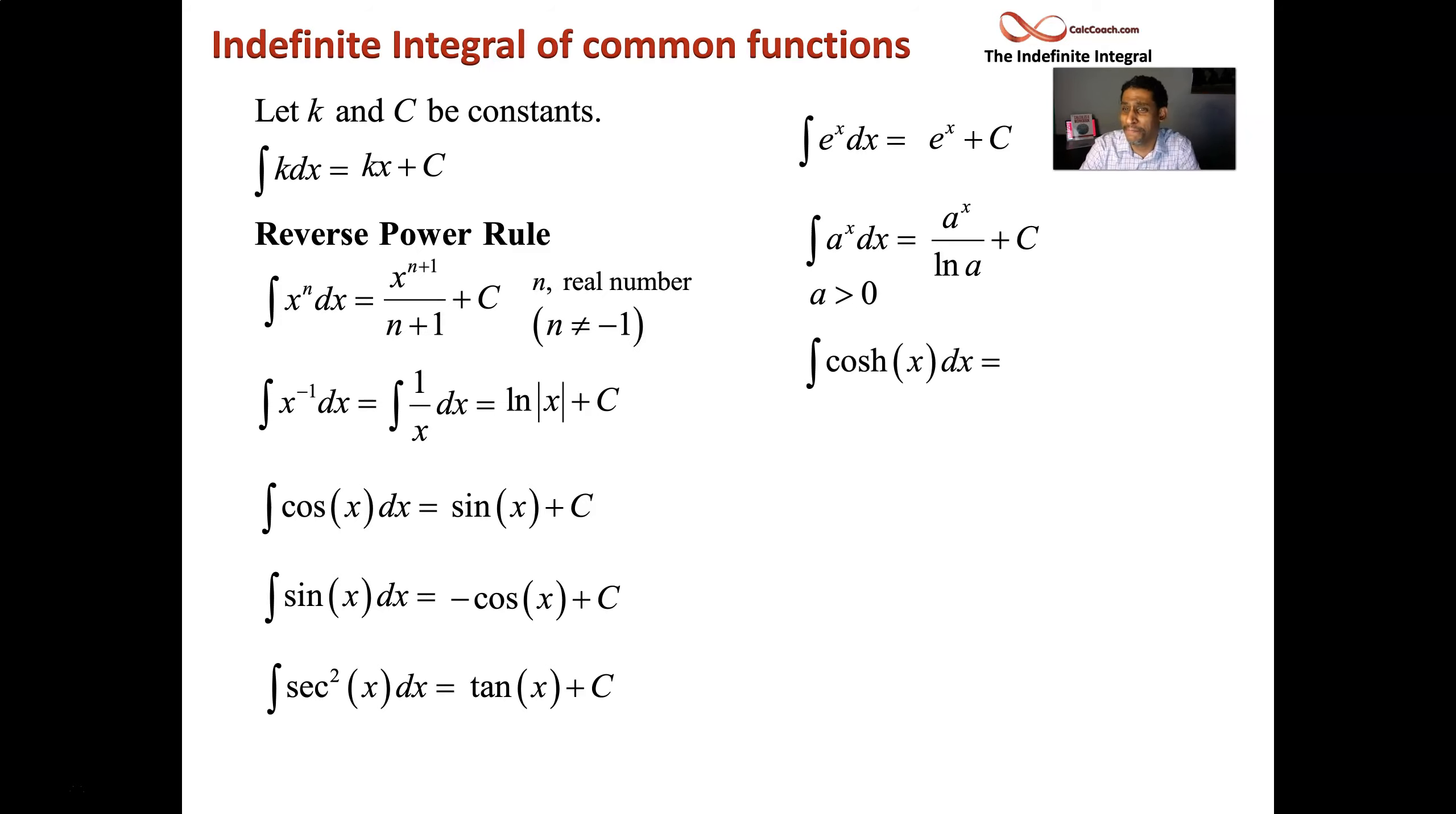Hyperbolic cosine gives hyperbolic sine. Hyperbolic sine gives hyperbolic cosine. No negative involved with the hyperbolic trig functions.